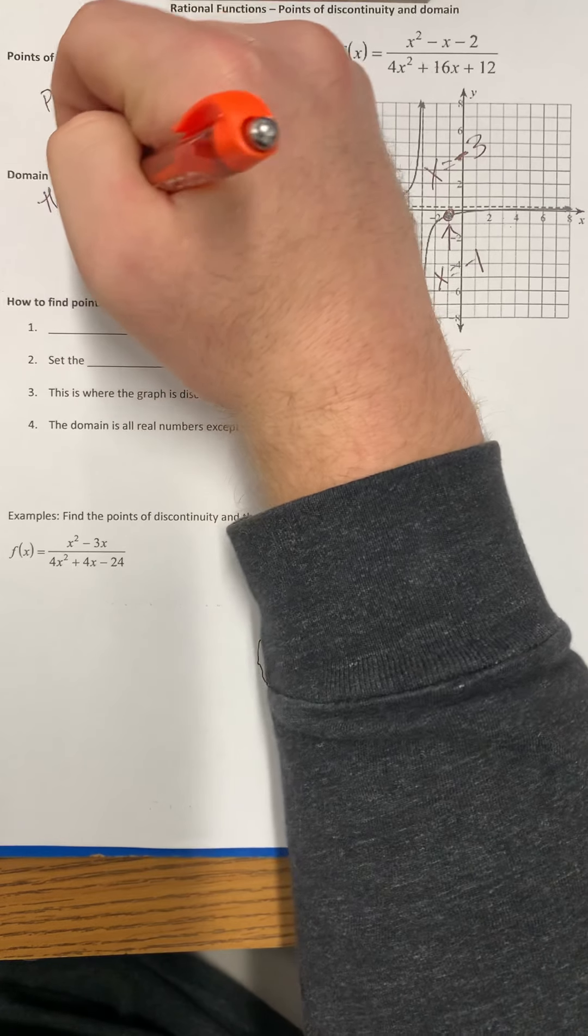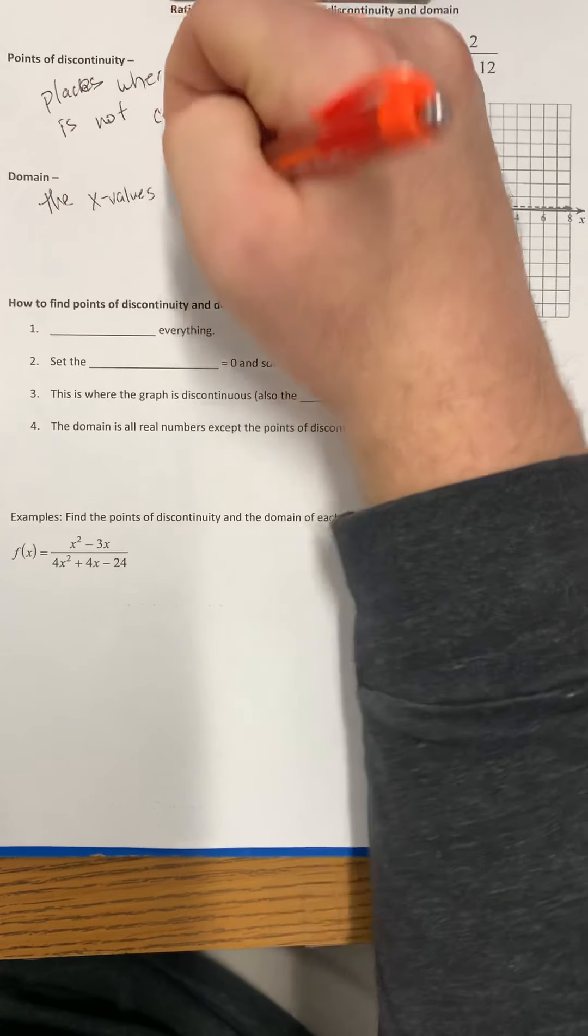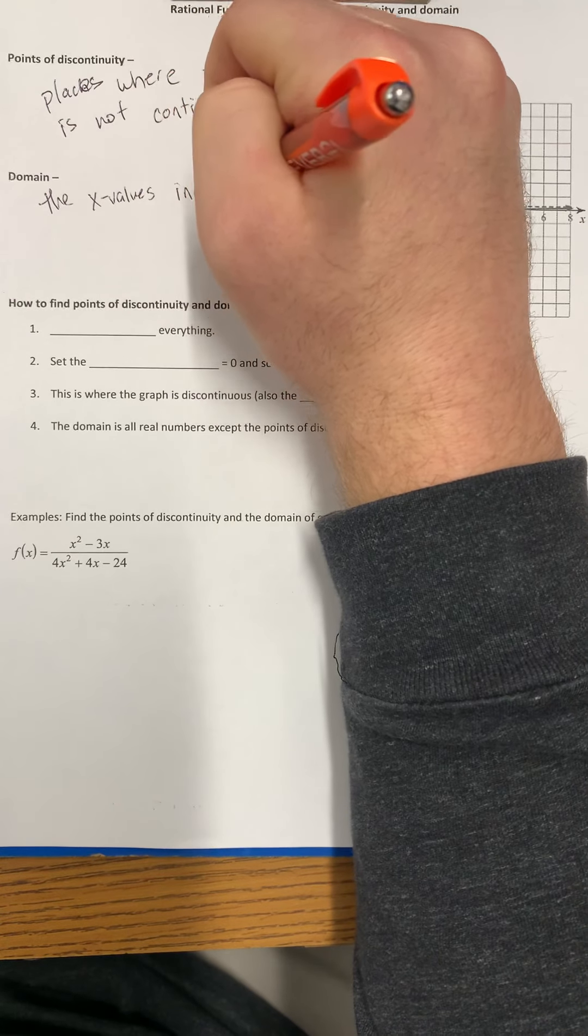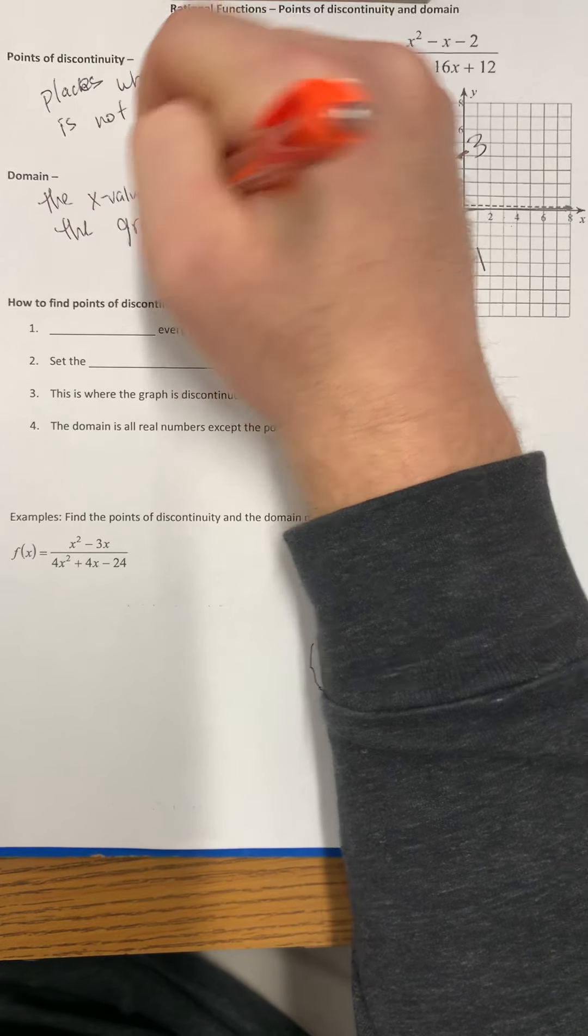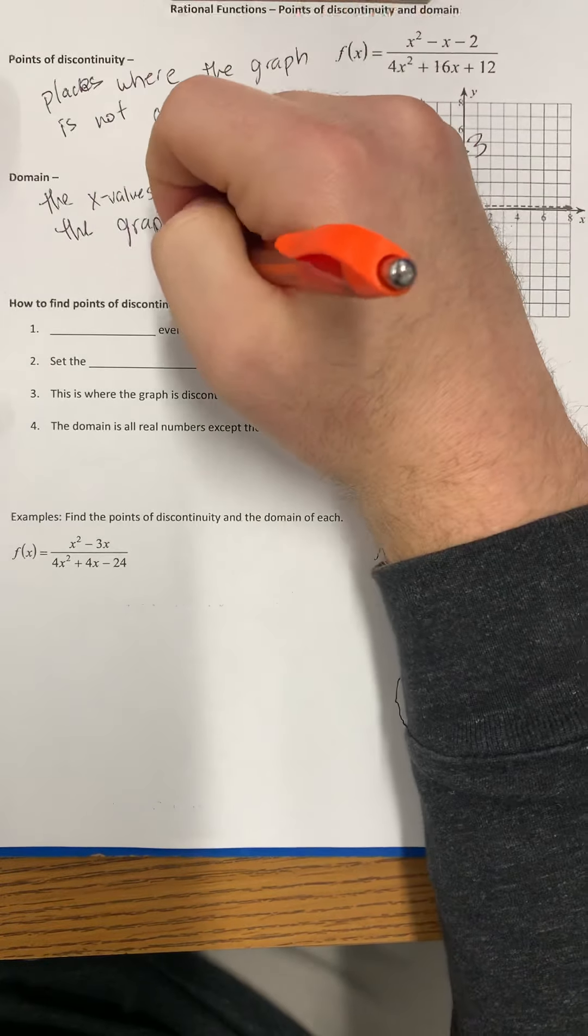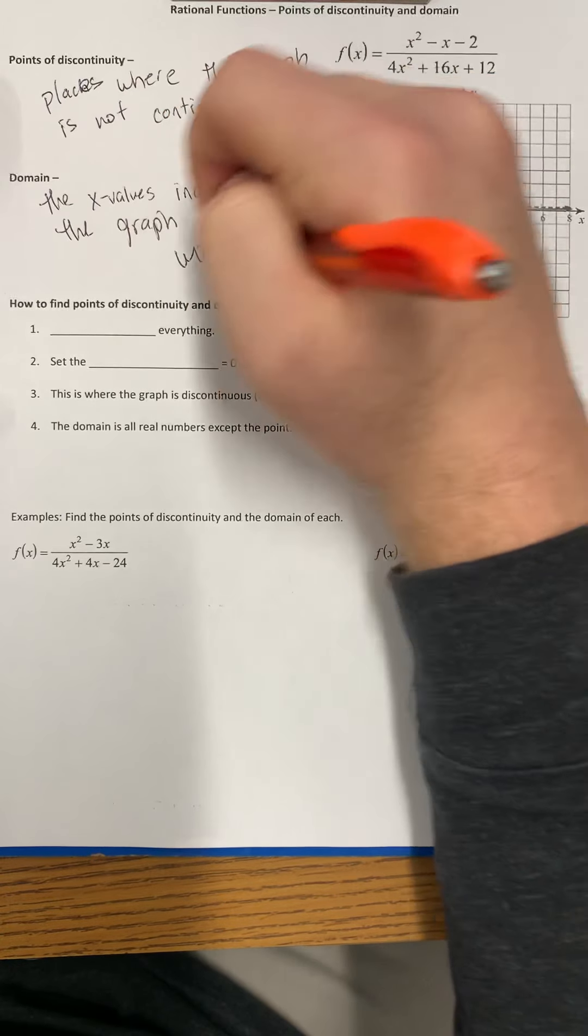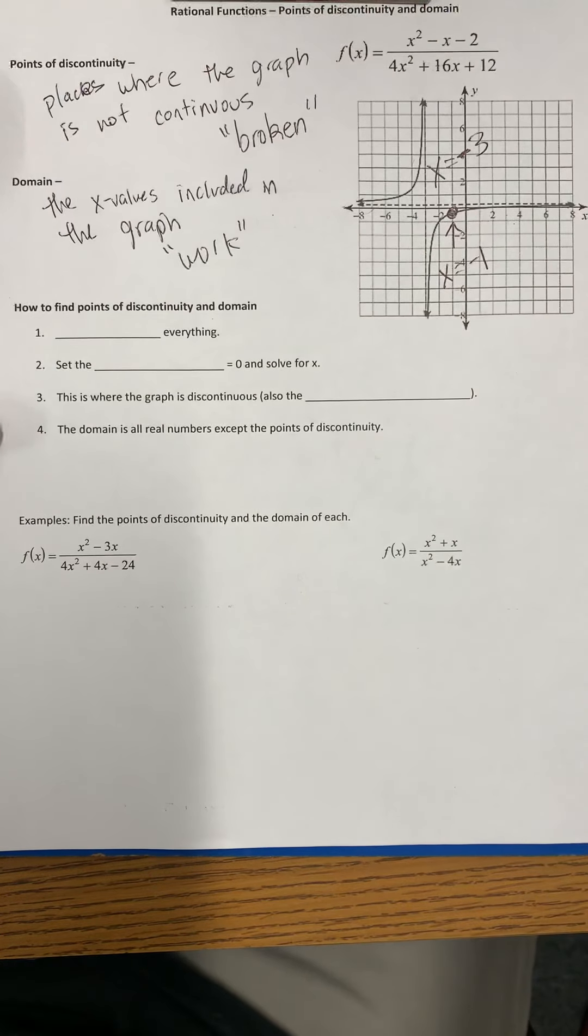So the domain is the x values included in the graph, also the ones that work with the equation, the ones that will not give us zero in the denominator if we plug them back in.